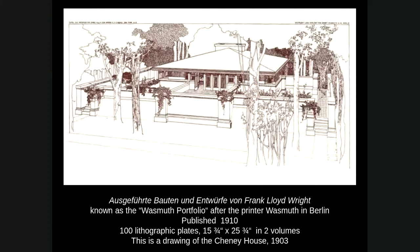Mrs. Cheney herself had two children and a husband, and she and Wright had been having an affair — probably since he was designing their house. They finally decided to break from their families and run off together, which was never a good thing even in modern times. In 1909, this was a massive scandal. It hit the Chicago Tribune and newspapers around the region and really ostracized him.